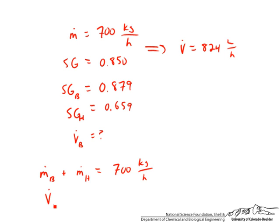We also know that if we add up the volumetric flow rates for benzene and hexane, that should equal the total of 824 liters per hour. We still have just two equations and four unknowns, which are two mass flow rates and two volumetric flow rates. The information that we use to eliminate those unknowns is the fact that we have two additional equations here.